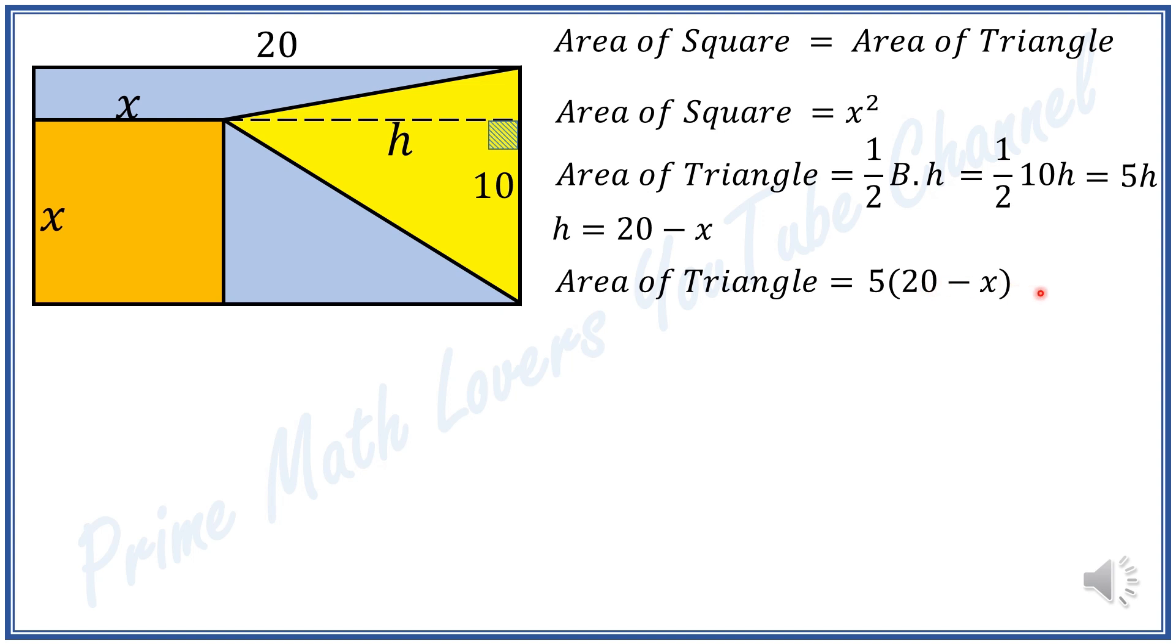Since the problem states that the areas are equal, we set up the equation: x squared, the area of the square, is equal to 5 times 20 minus x, the area of the triangle.